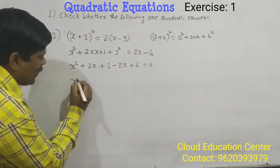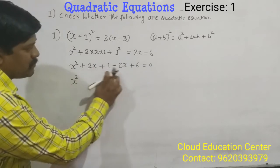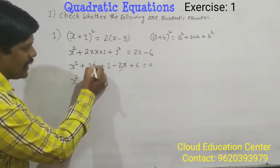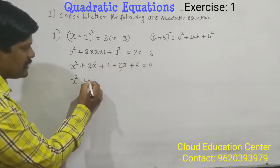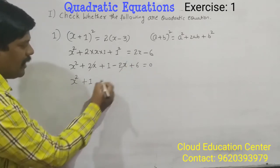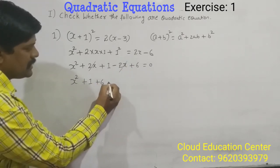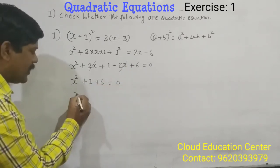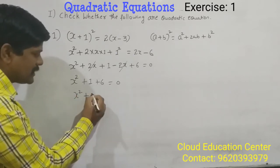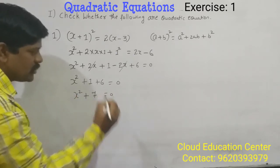Okay, now x square as it is, plus 2x minus 2x, that cancel. Here plus 1 and plus 6 is there. Now, it is x square plus 1 plus 6 is 7, it is equal to 0.